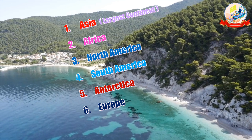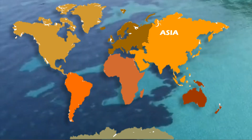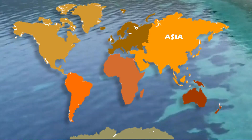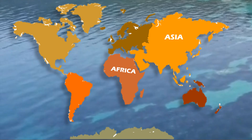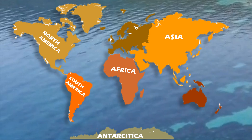5. Antarctica. 6. Europe. 7. Australia — it is the smallest continent in the world. Let us identify these seven continents in the world map. This is Asia — the biggest continent in the world. This is Africa — the second largest continent. This is North America. This is South America. This is Antarctica. This is Europe. This is Australia — the smallest continent in the world.